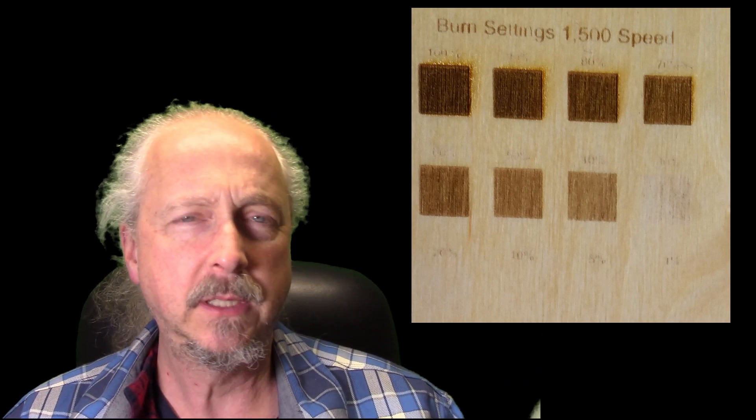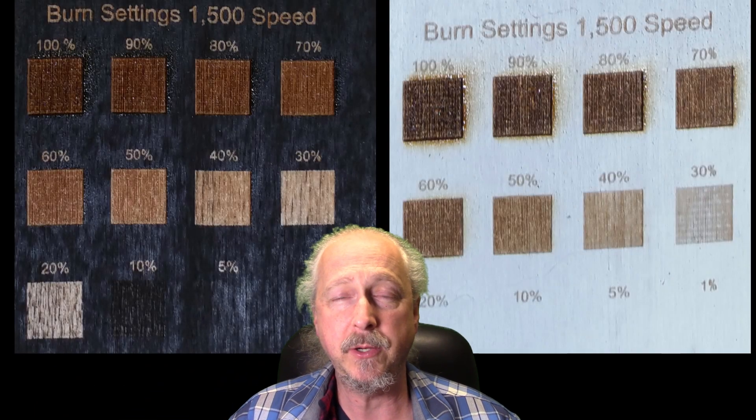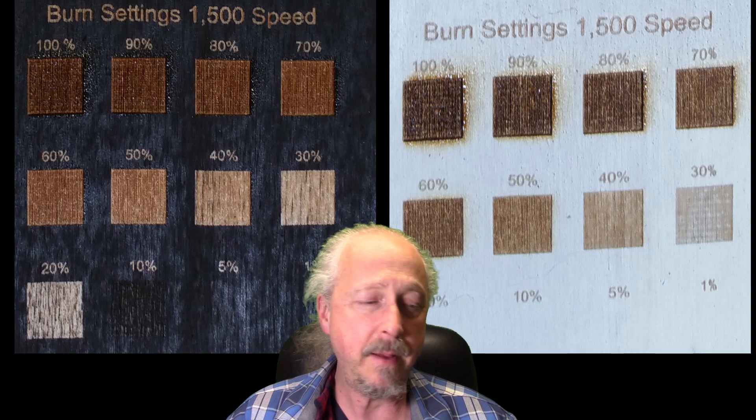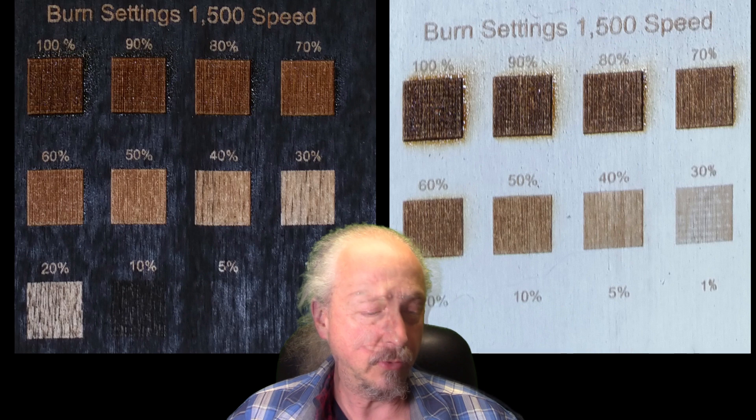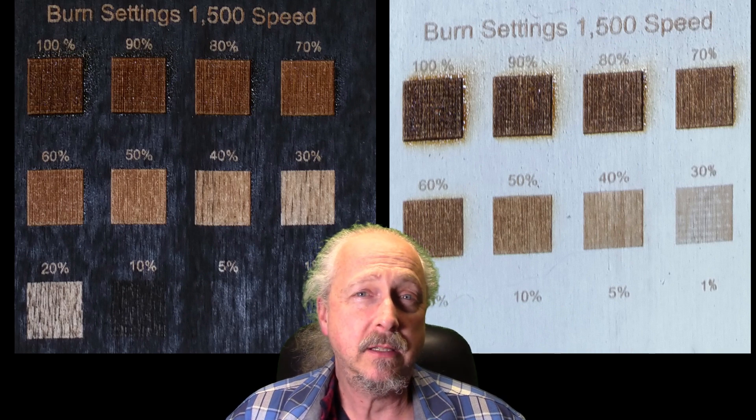So the clear was kind of a surprise. I thought it would burn better than that. We still have plenty of power to get down in there. This is at 1500 millimeters per minute, so the speed is a little bit slow. We could speed that up and keep the power up there and go faster, at least, and get through. We can maybe use this on some future projects cutting some wood.